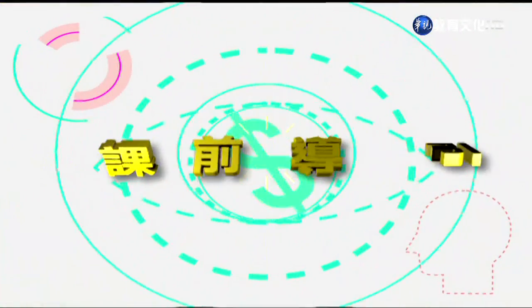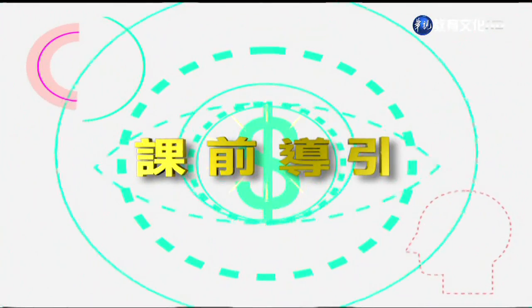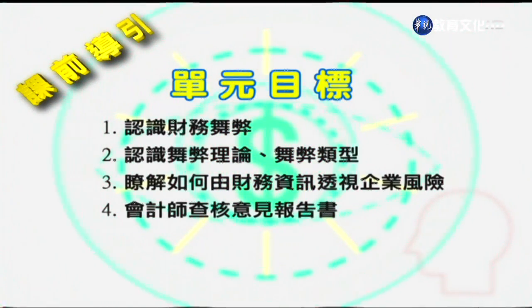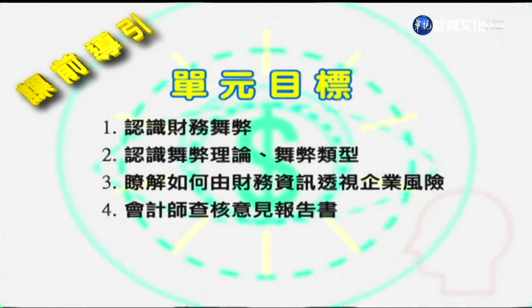大家好，我是陈述段老师。今天我们要为同学介绍第17讲——财务舞弊及会计师的查核报告。本讲次的单元目标有以下四点：第一，认识财务舞弊；第二，认识舞弊的理论与舞弊的类型；第三，了解如何由财务资讯透视企业的风险；以及第四，会计师的查核意见报告书。